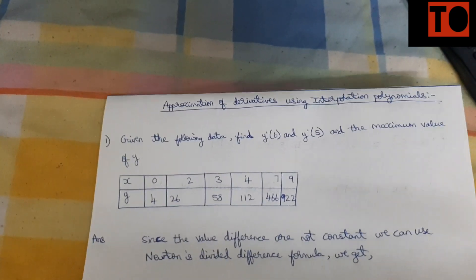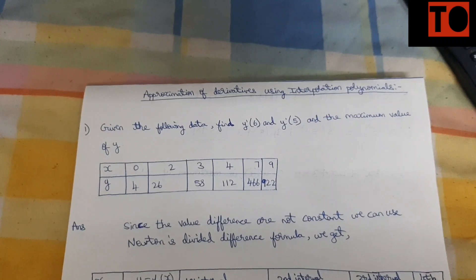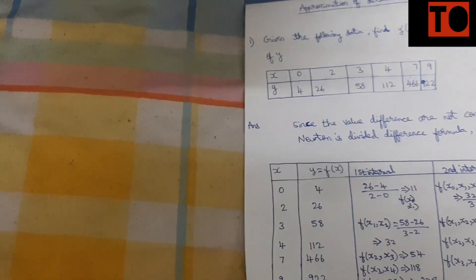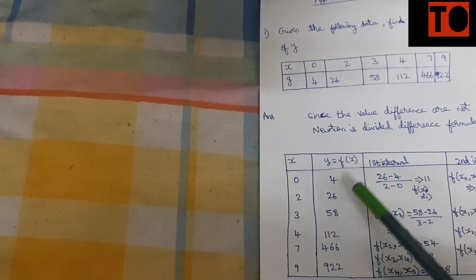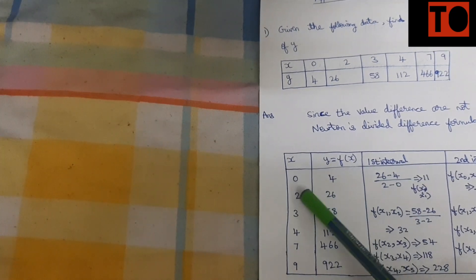For Newton's divided difference formula, we form a table with x column values and y column values. This is the first iteration where we set up the divided difference table.